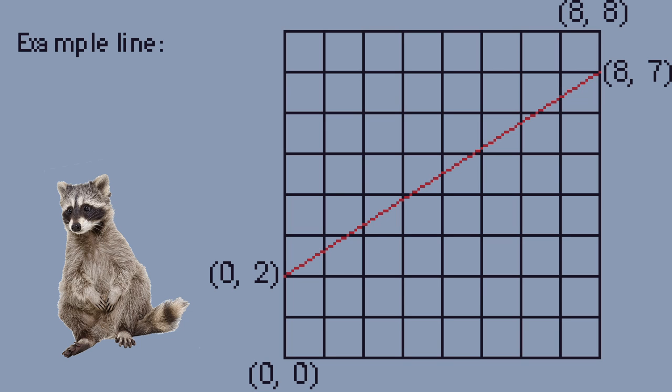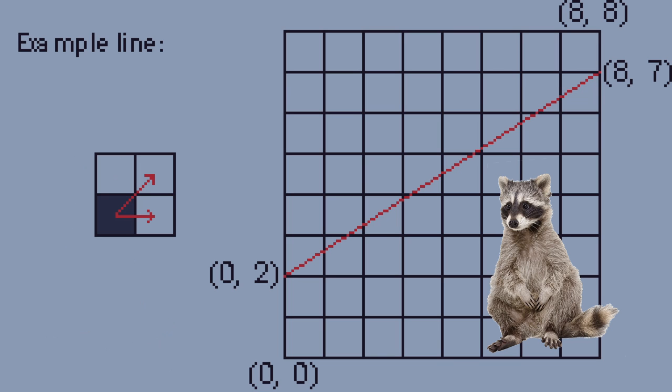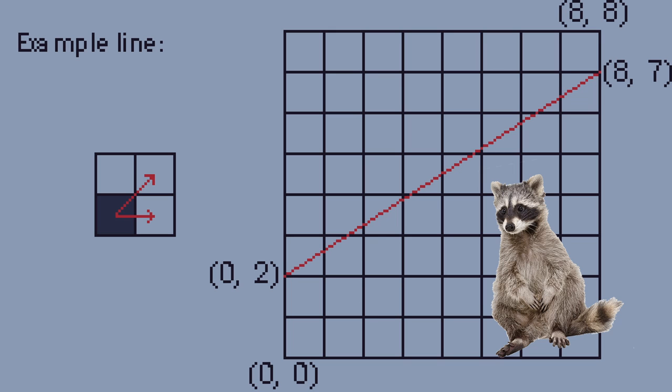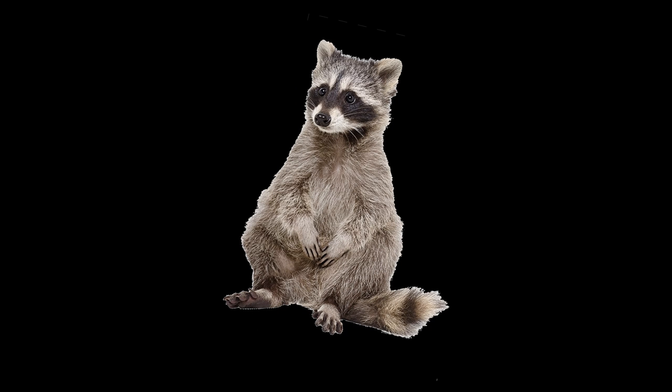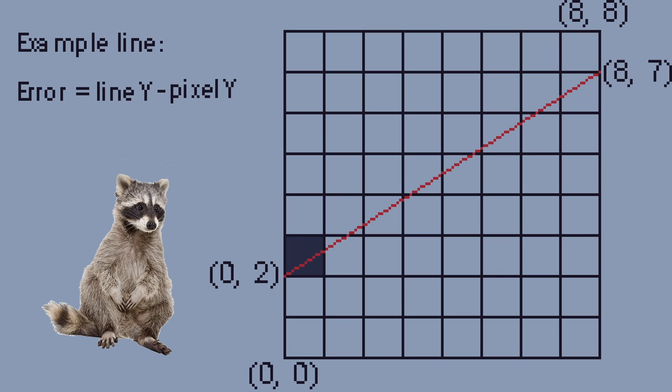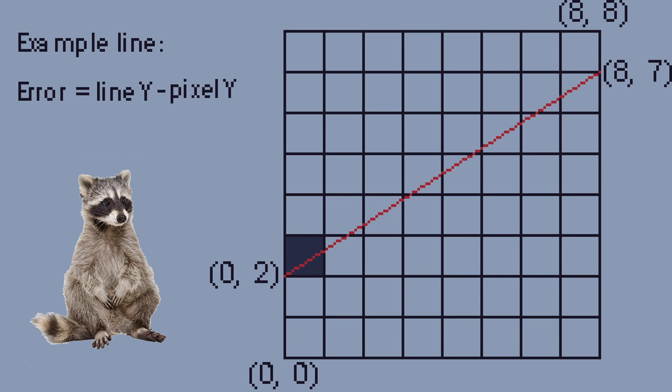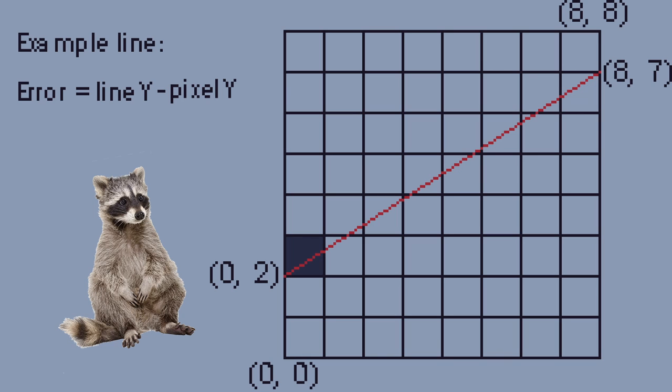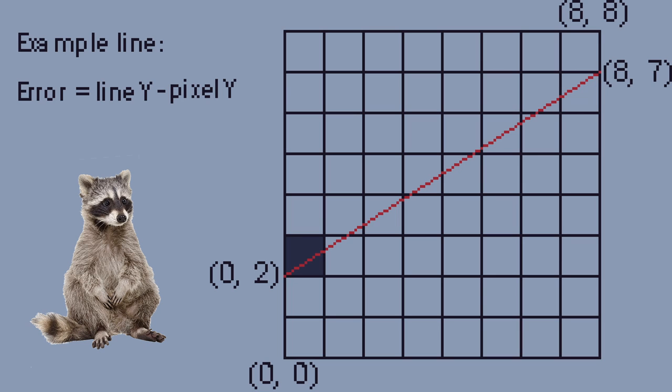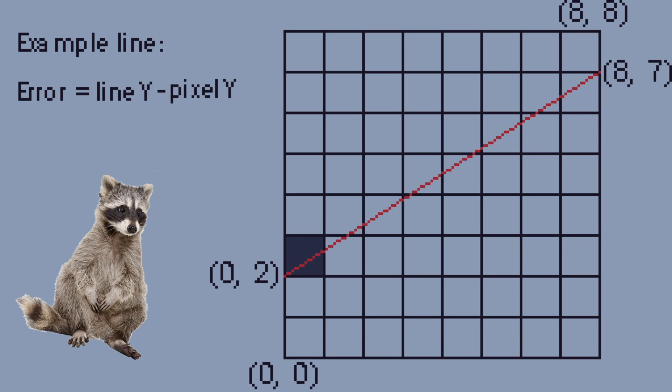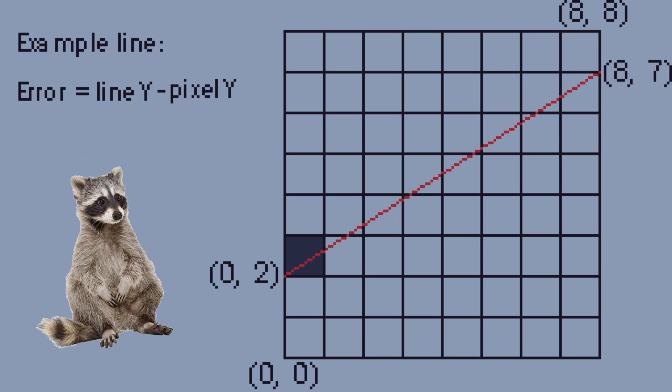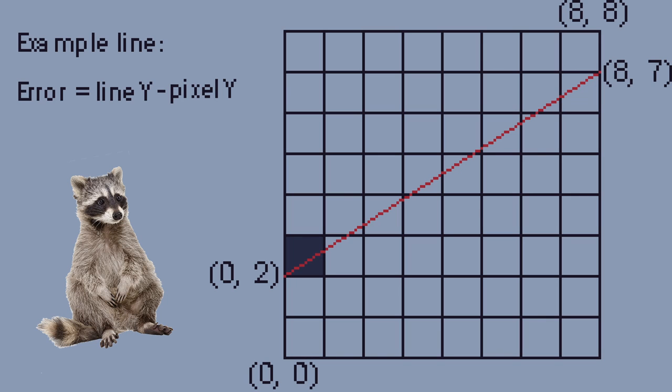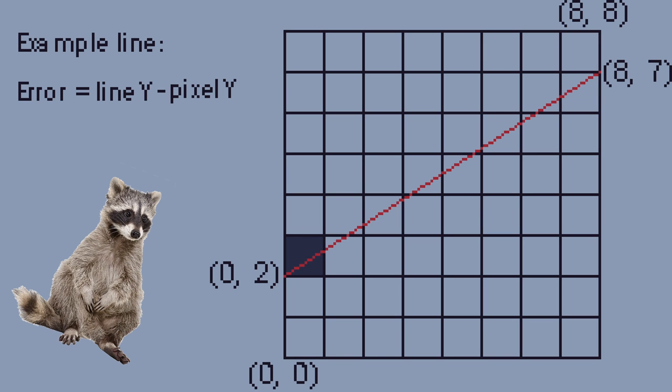To find the Y value of our next pixel, there are a couple things we can do. We can either pick the pixel to the right of our current pixel, or we can pick the pixel to the top right of our current pixel. But how do we choose? We can use something called the error to determine which option to pick. The error is essentially how far away the actual line is, away from the center of the pixel on the screen. We calculate this by taking the Y position of the line, and subtracting the Y value of the next pixel.